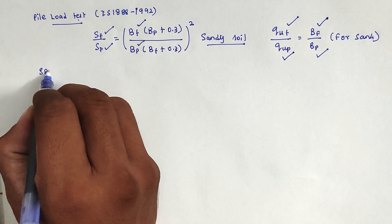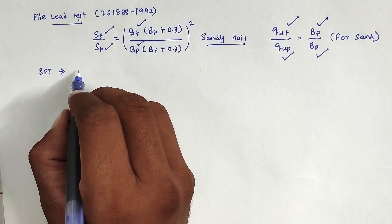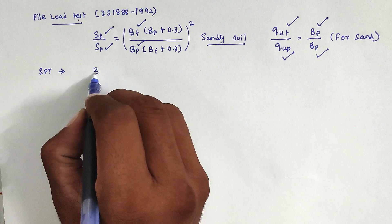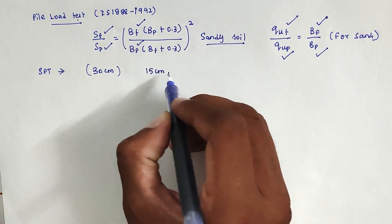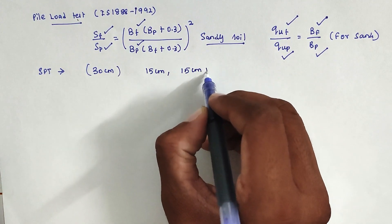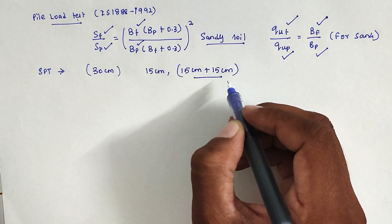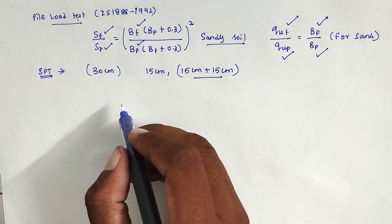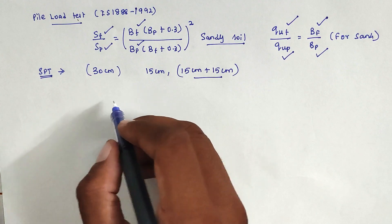The Standard Penetration Test (SPT) is mainly used to find the soil bearing capacity using standard penetration numbers. It is the number of blows required to penetrate 30 cm of soil — the first 15 cm for seating, then the next 15 cm for the actual SPT count. Using Terzaghi's formulas, Westergaard analysis, or Taylor's analysis, we can calculate the SPT value.